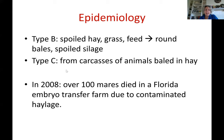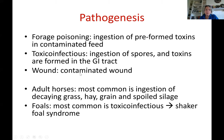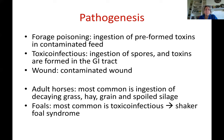Round bales are not inherently bad, but they must be managed with respect. They should be stored correctly and not left outside exposed to rain and weather elements. Ideally, no dead animals should be present inside them. There are three ways the pathogenesis of botulism can occur: forage poisoning (ingestion of preformed free toxins in contaminated feed), toxico-infectious (ingestion of spores that form toxins in the GI tract), and wound contamination.